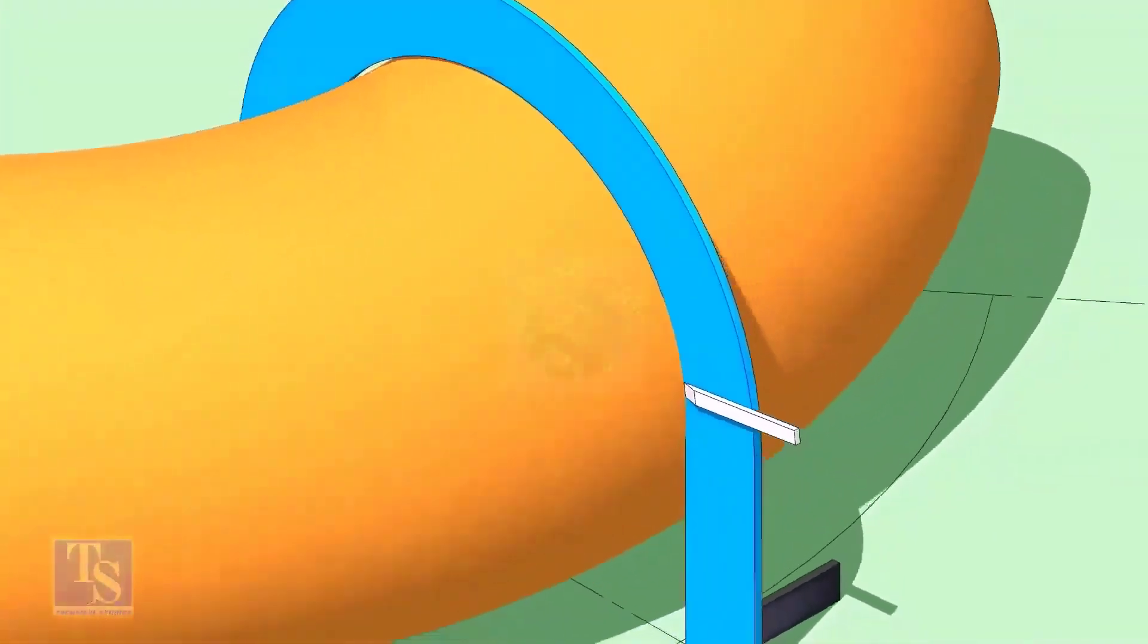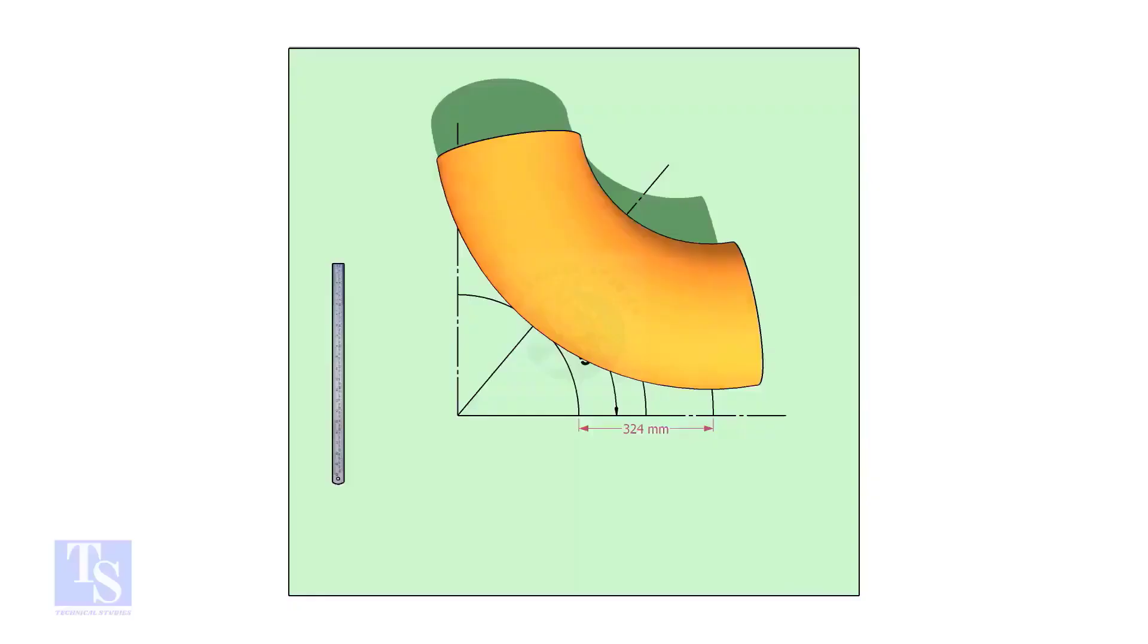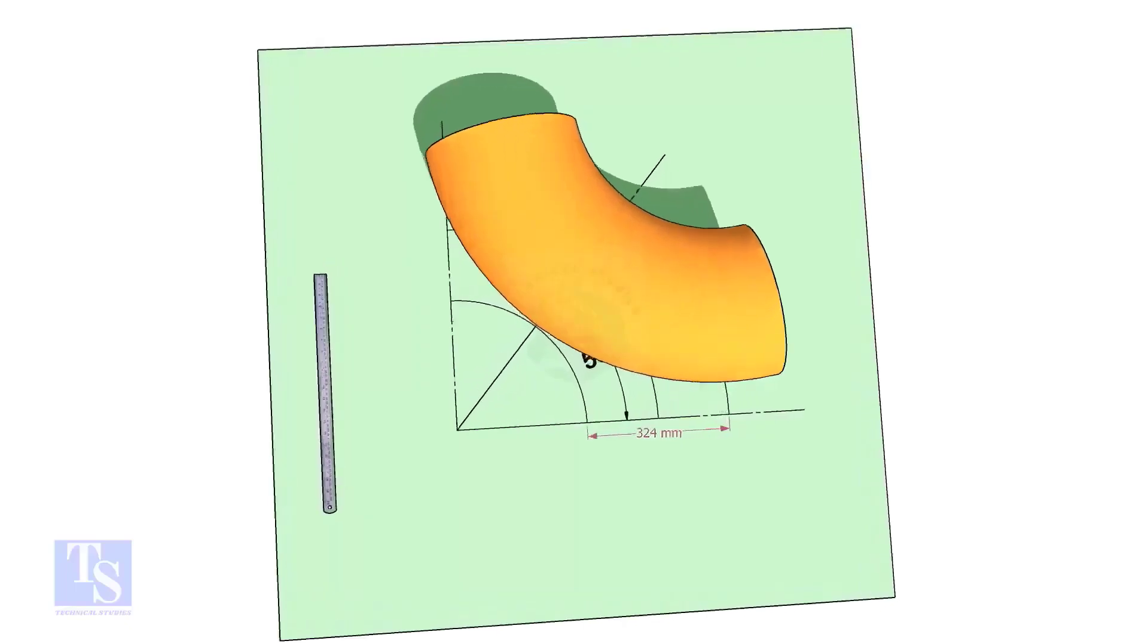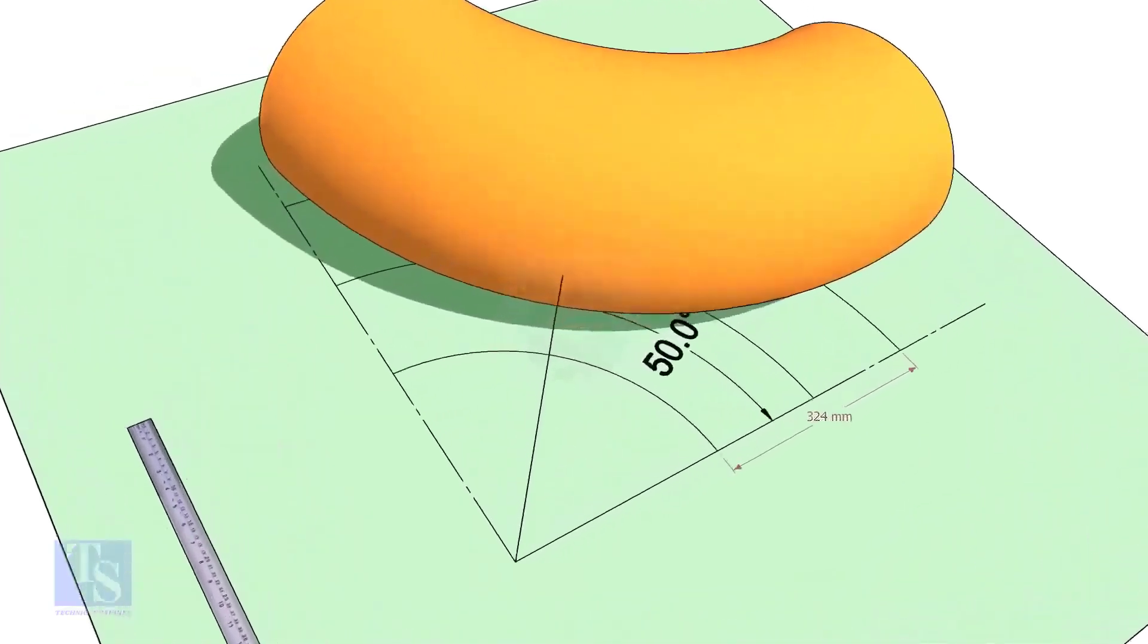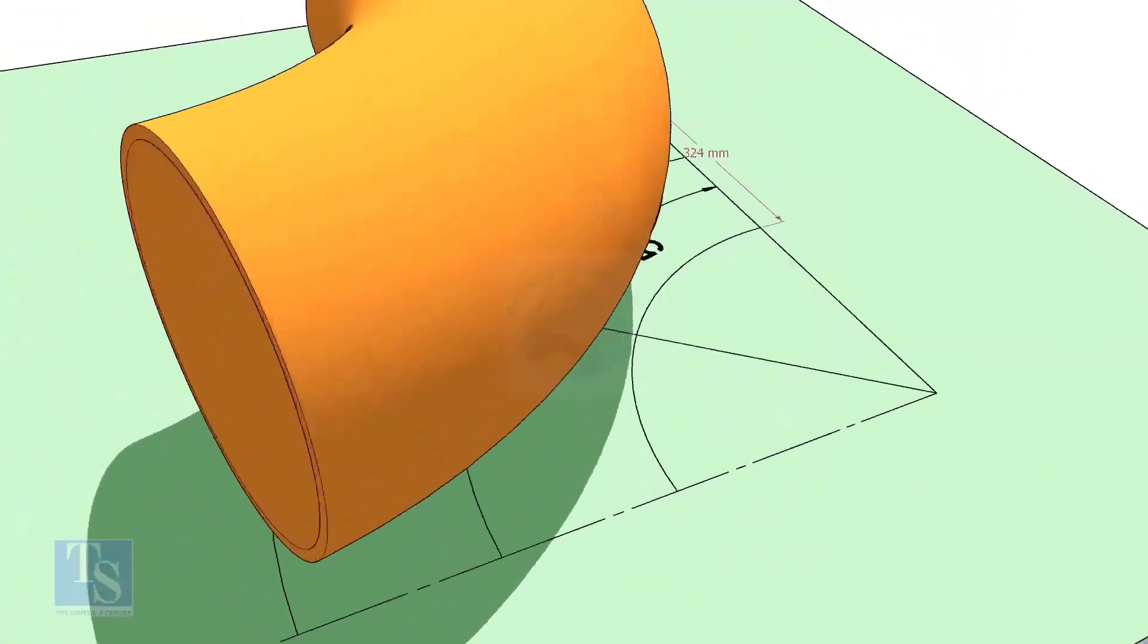Draw a half circle line on the elbow where the plate touches the pipe. Reverse the elbow position as shown. Match the line on the elbow and the 50-degree line.